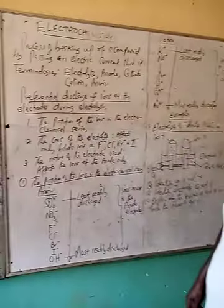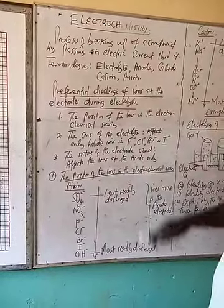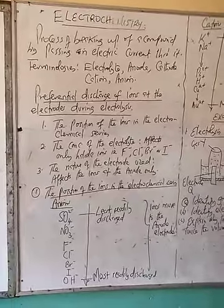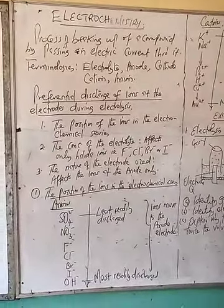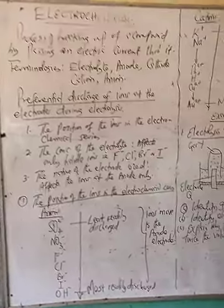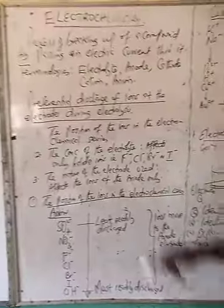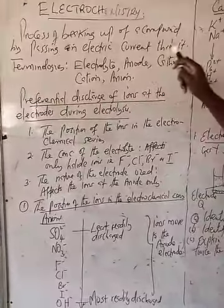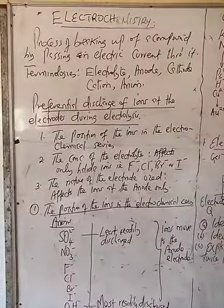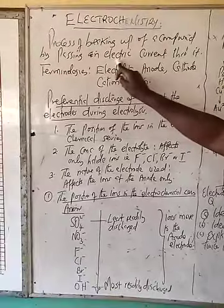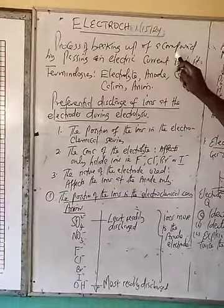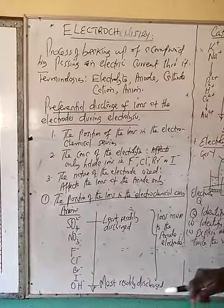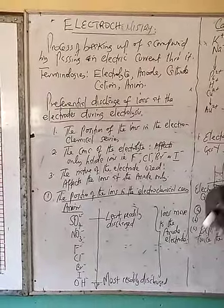Today, we want to discuss the preferential discharge of ions at the electrodes during electrolysis. Electrolysis is the process of breaking up of an electrolyte by passing an electric current through it. In the process, the compound breaks up. That process is what we call electrolysis.